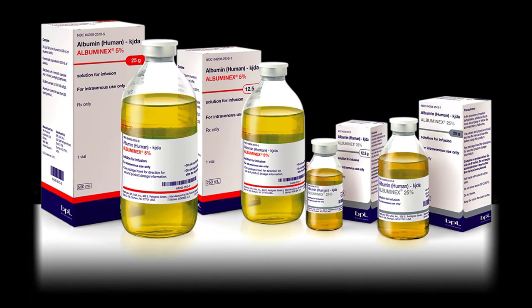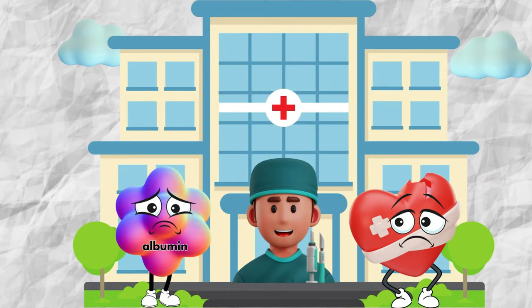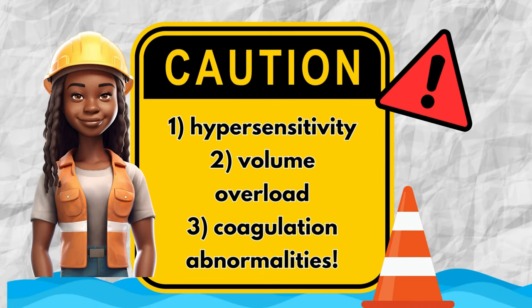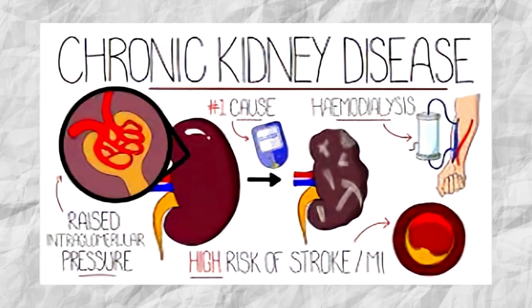5% and 25% human albumin are the most widely used colloidal IV solutions and are given for hypovolemia, cirrhosis and ascites, nephrotic syndrome, low albumin from malnutrition and burns, cardiopulmonary patients, paracentesis, and patients undergoing surgery. Cautions include hypersensitivity reactions, volume overload, and coagulation abnormalities, so monitor allergies, electrolyte levels, and clotting factors such as PT, PCT, and INR closely. Pre-existing renal function issues are a concern as they can lead to reduced clearance causing prolonged effects and fluid overload. As a blood product, there is also a risk of contaminants and infections, though it is not 100% guaranteed to be prevented.